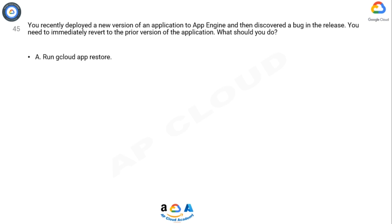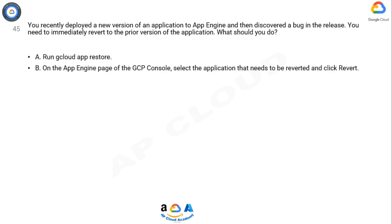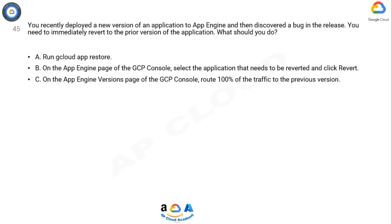A. Run gcloud app restore. B. On the App Engine page of the GCP console, select the application that needs to be reverted and click revert. C. On the App Engine versions page of the GCP console, route 100% of the traffic to the previous version.